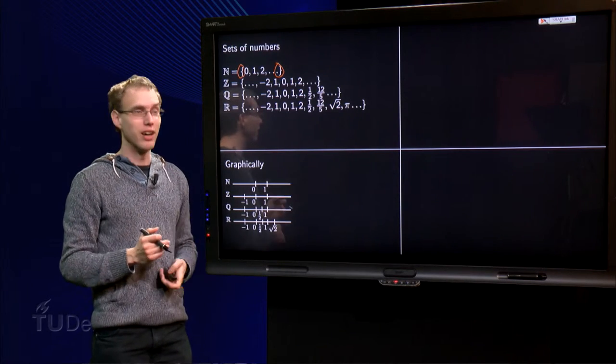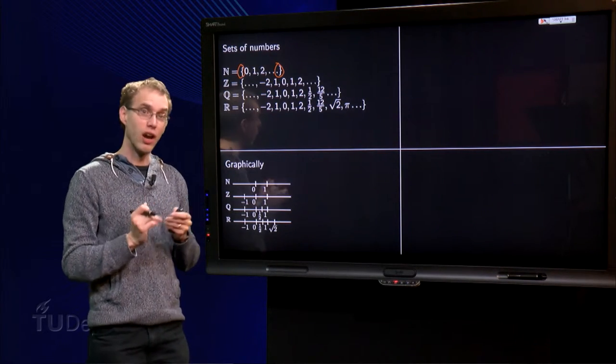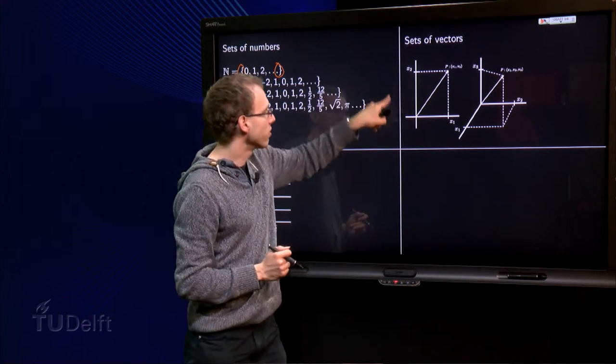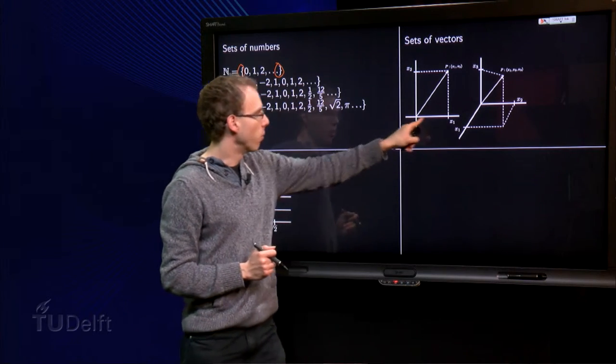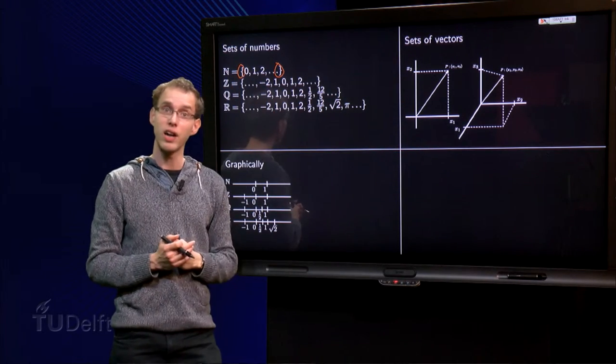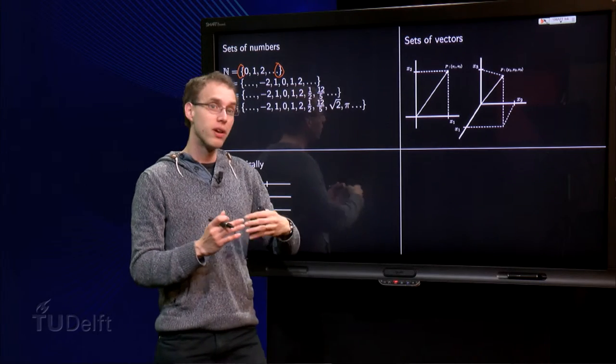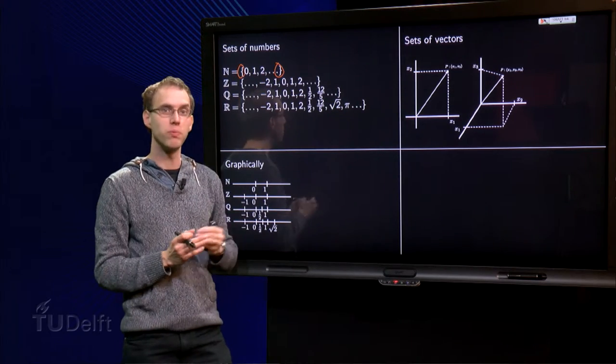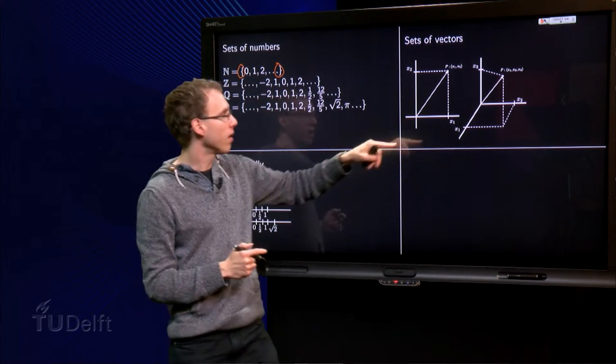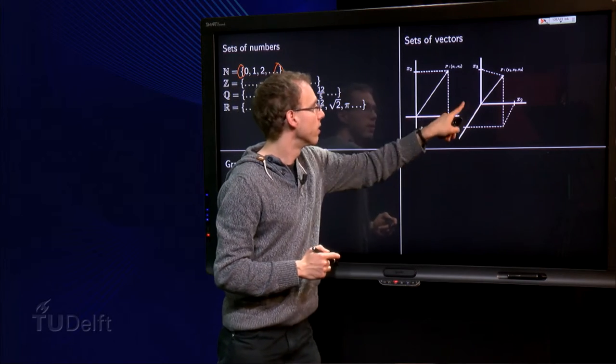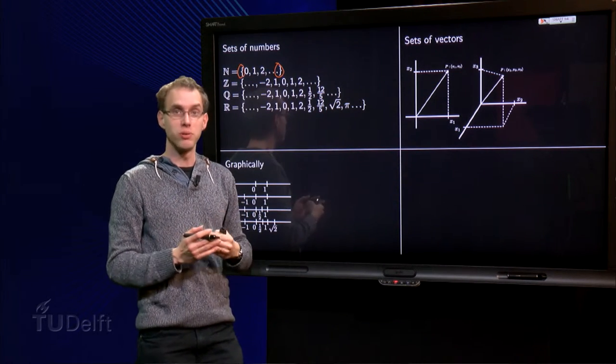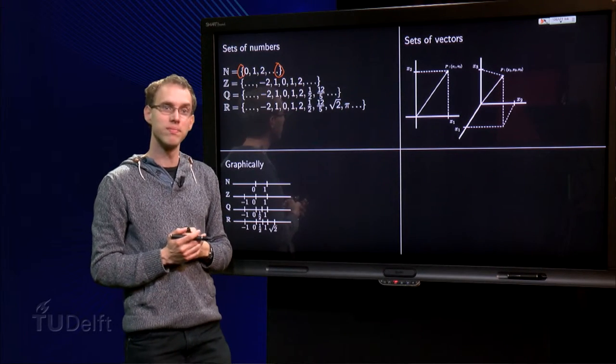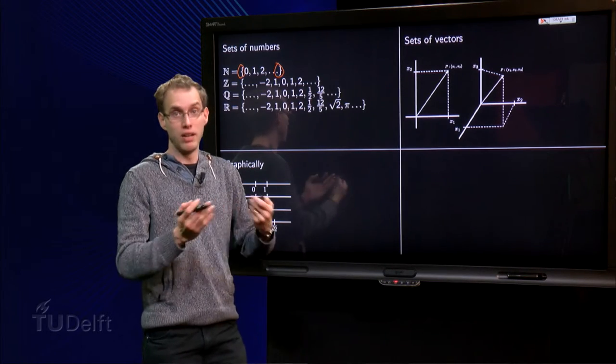Now we want to go on in the algebra, and we want to go to even larger sets, but then we have to go to 2D or 3D. For example, we can make sets of vectors, we make one copy of R, another copy of R, and then we can make sets of points with 2 numbers, say point P, x1, x2. Or we make 3 copies of R, 1, 2, 3, and then we have points which consist of 3 real numbers, point P, x1, x2, x3.